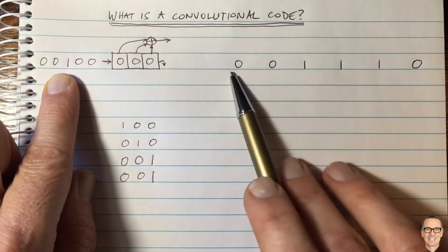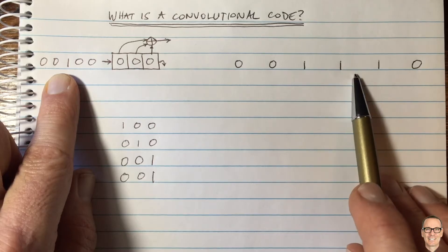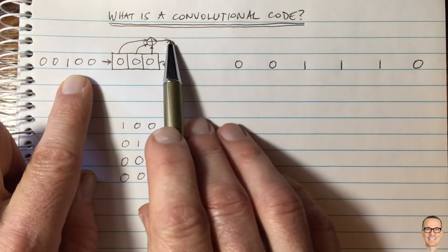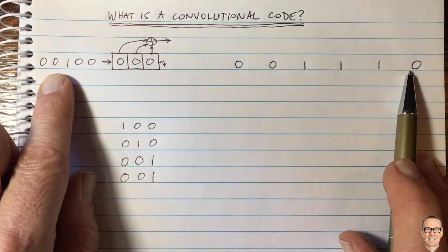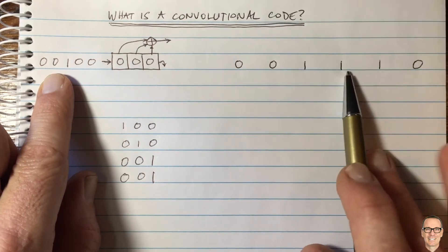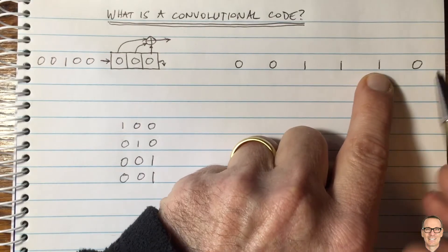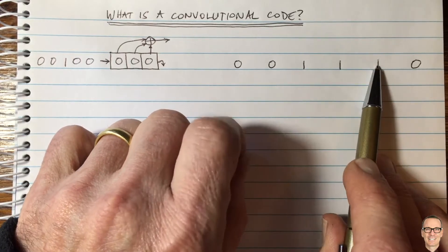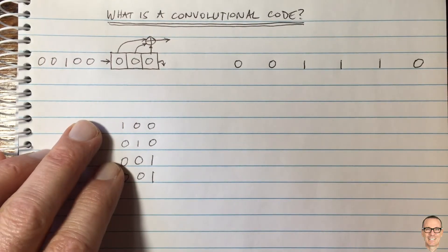This is the structure in the output sequence. If you receive this sequence, you'd be looking for that structure, and if the received sequence did not have it, you'd know an error had happened. Whether you can correct the error depends on how good your parity check functions are. With just one parity bit like this, you can detect an error but you can't correct it — you wouldn't know which bit was in error.